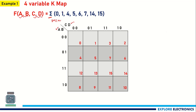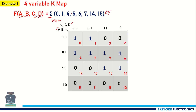I will write the cell numbers and then fill in the K-map. Looking at the example, we fill a 1 in whichever cell number is given: 0, 1, 4, 5, 6, 7, 14, and 15. The remaining cells are filled with zeros.